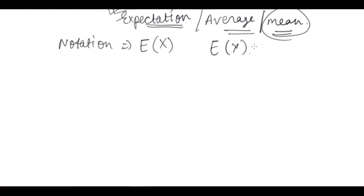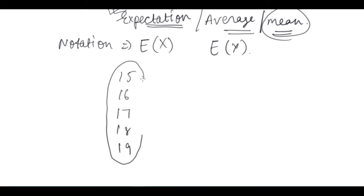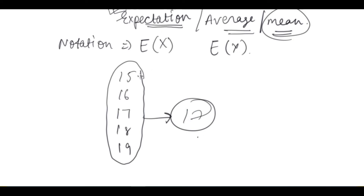So mean means: suppose we have many values, suppose 15, 16, 17, 18, and 9. If we compute the average, it will be a number that comes from these numbers. So the average would be around 17, which is a number that comes from 15 to 19, from these numbers.